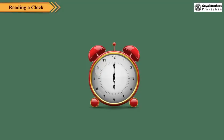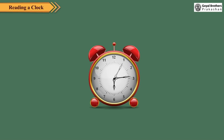The shorter hand is called the minute hand. It moves slower than the second hand. It takes 5 minutes to move from one number to another. It completes one round of the dial in 60 minutes or 1 hour.